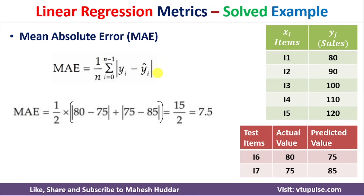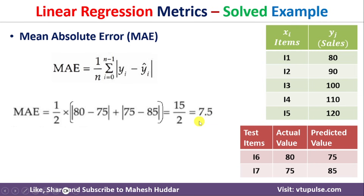Once we put the values into the formula, the equation becomes: MAE = (1/2) × (|80 − 75| + |75 − 85|). Solving this gives (1/2) × (5 + 10) = 15/2 = 7.5. So the Mean Absolute Error is 7.5 in this case.